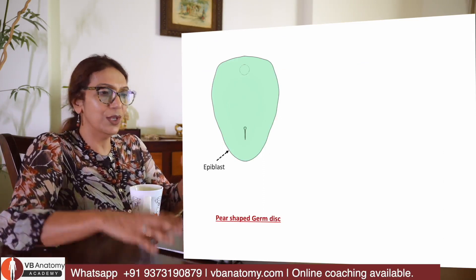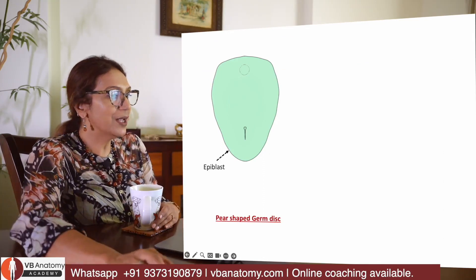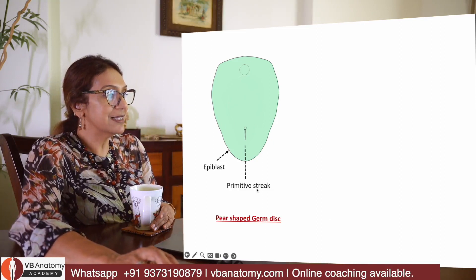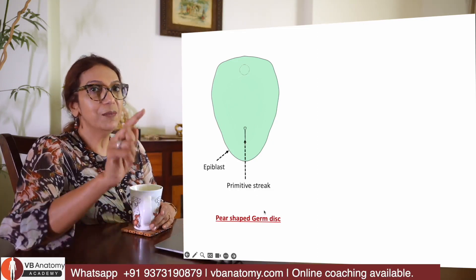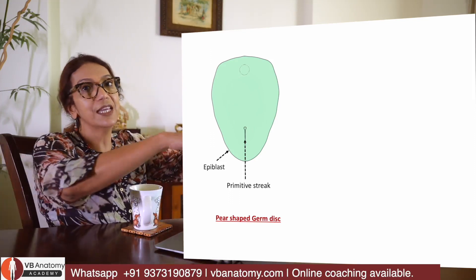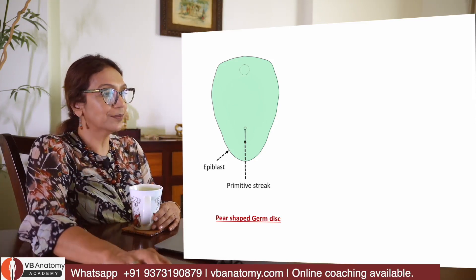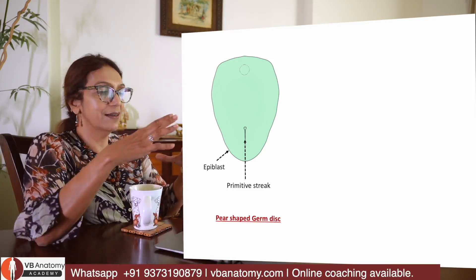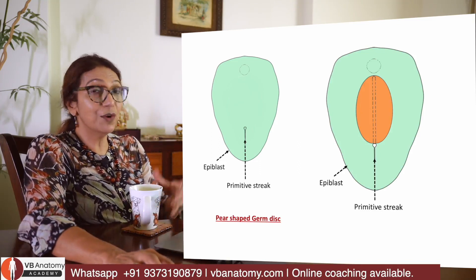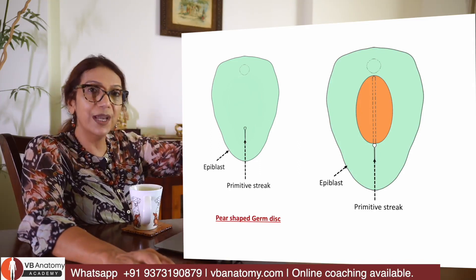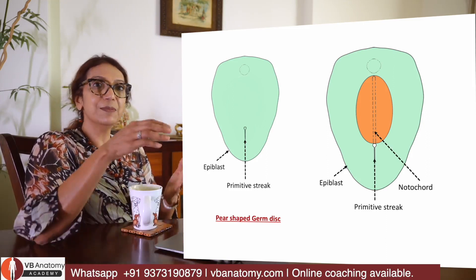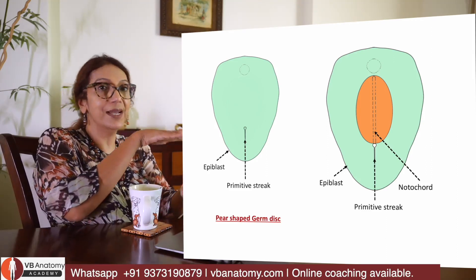This is a bilaminar embryo — you are looking at it from the top. The epiblast layer is visible, and below on the other side is the hypoblast layer. This is the primitive streak — a linear streak through which epiblast cells go down and create the intraembryonic mesoderm. From the apex of the primitive streak, cells have gone down and forward creating the notochord, which lies between the ectoderm and underlying endoderm.